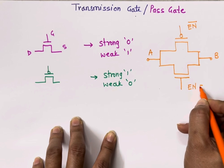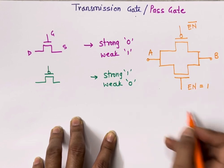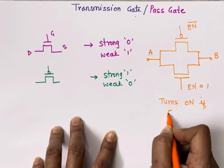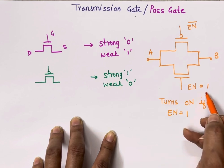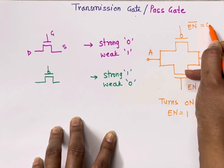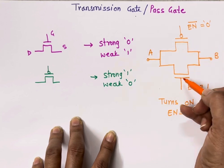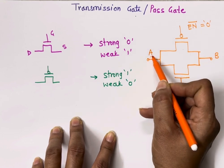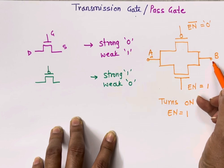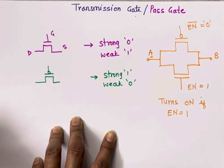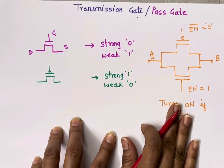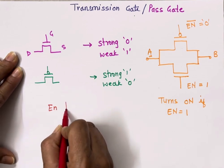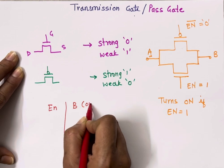The transmission gate turns on if enable is equal to one. When enable is equal to one, automatically enable-bar becomes zero, so both NMOS and PMOS transistors turn on. When they turn on, they act as a short circuit and whichever value is present at input A will go to output B. Let me write the truth table for this transmission gate — with columns for enable and output B.